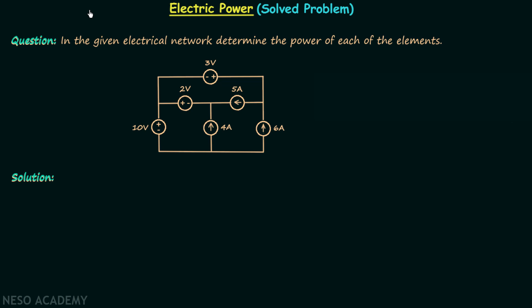In the last lecture we had a discussion on electric power — what it is, how to calculate it, and how to find if power is being delivered or absorbed by a particular element. In this lecture we are going to revise and implement all those concepts with the help of one question involving a network.